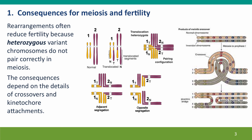The consequences of chromosome rearrangements for meiosis and fertility can be quite severe. Many people who are perfectly healthy discover that they're infertile because they carry a chromosome rearrangement. For example, consider this translocation shown in the first panel of this figure. Here's the normal chromosome arrangement, and here's a rearrangement where a part of the first chromosome is on the second chromosome and a part of the second chromosome is on the first chromosome.